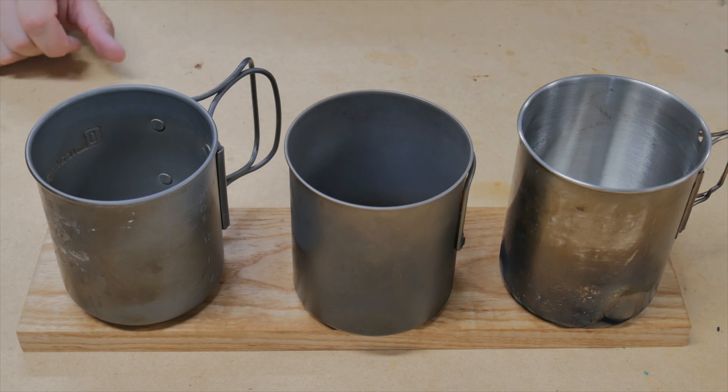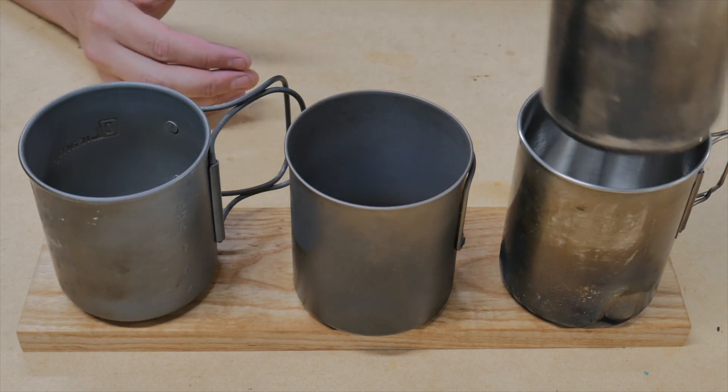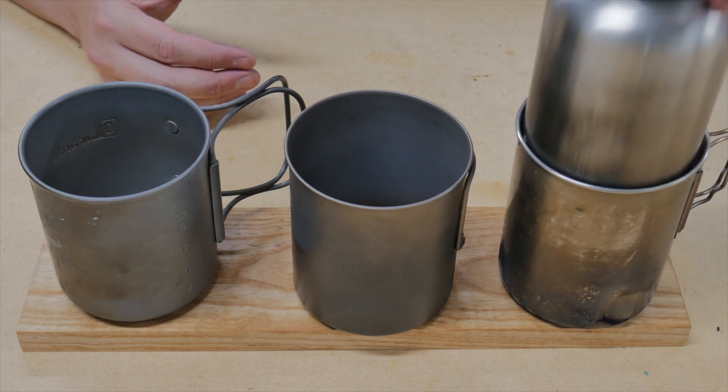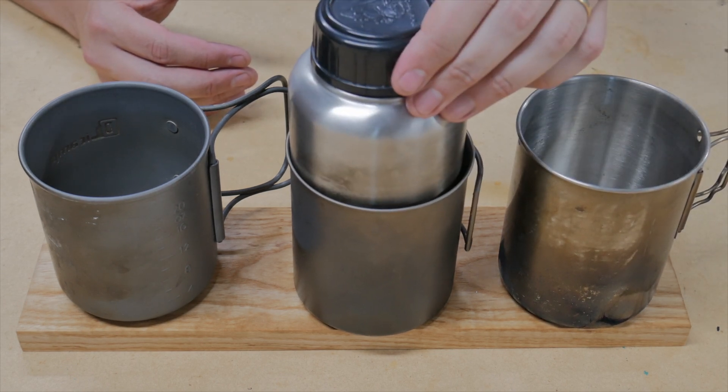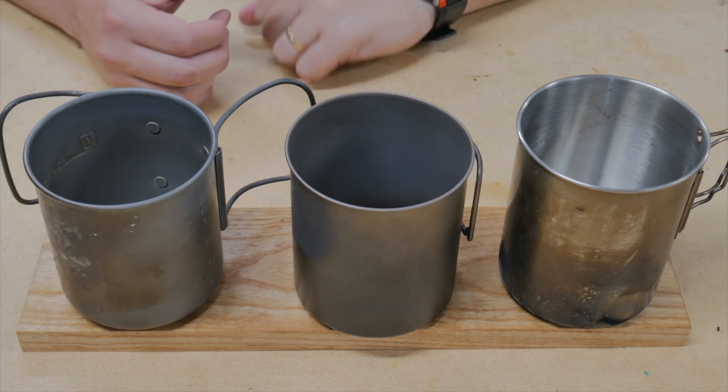There's one thing that all of them have in common. If you get a common-sized Nalgene, this happens to be a stainless steel Nalgene from the Pathfinder School, it fits right there, fits right there, and it fits right there. So, what does that mean?